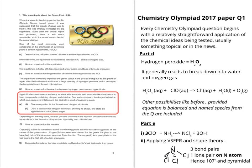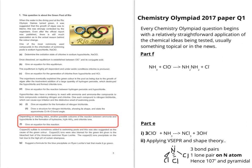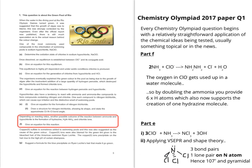Depending on reacting ratios, another possible outcome of the reaction between ammonia and hypochlorite is the formation of hydrazine, H₂N-NH₂, and chloride ions. To balance this equation, the oxygen in the hypochlorite is used up in a water molecule on the right-hand side, which means you have six hydrogens on the right. The easiest way to provide six hydrogens is to double the ammonia on the left, which also provides the two nitrogens needed to form one hydrazine molecule.